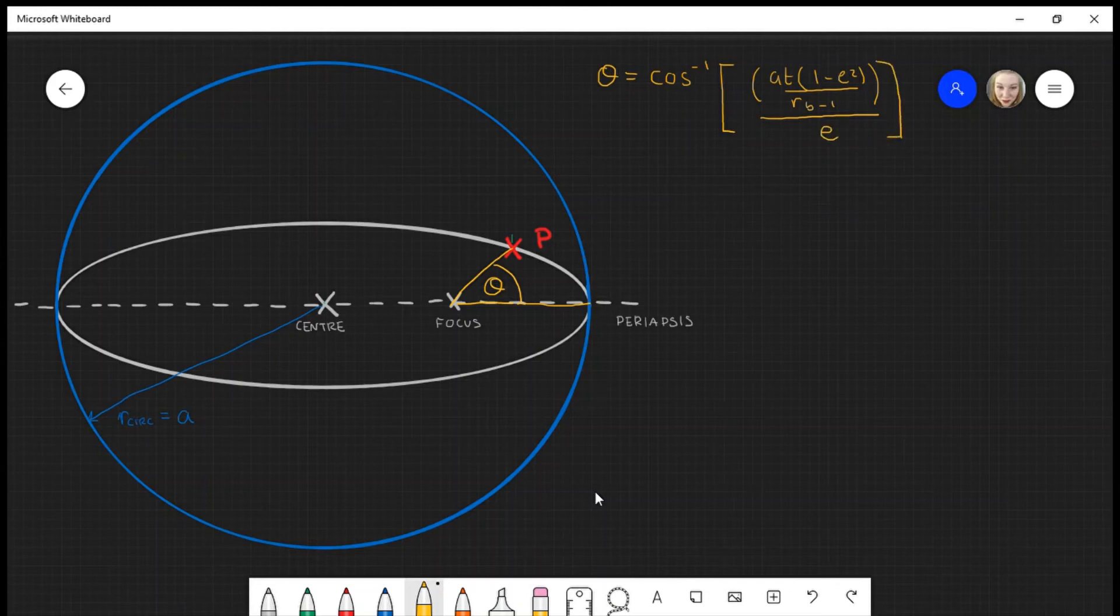A is the semi-major axis, E is the eccentricity. If you don't know where it is, I'll just draw it at the side. E is given by 1 over R_A.